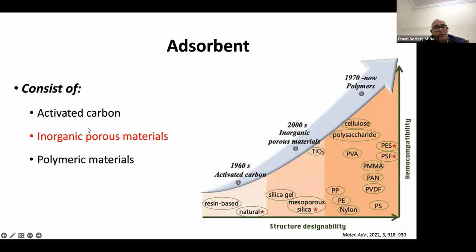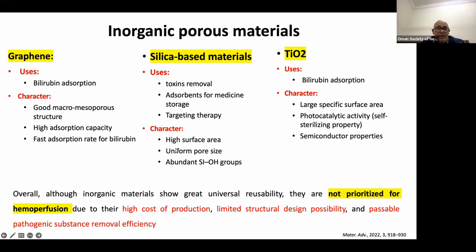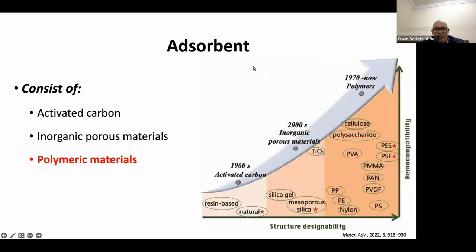During the 2000s, inorganic porous materials were developed, including graphene (an upgrade of carbon), silica-based material, and TiO2. These are not prioritized for hemoperfusion due to high production costs, limited design possibilities, and passable pathogenic substance removal efficiency — meaning the cost is too high, the shape is difficult to regulate, and the effectiveness is insufficient.